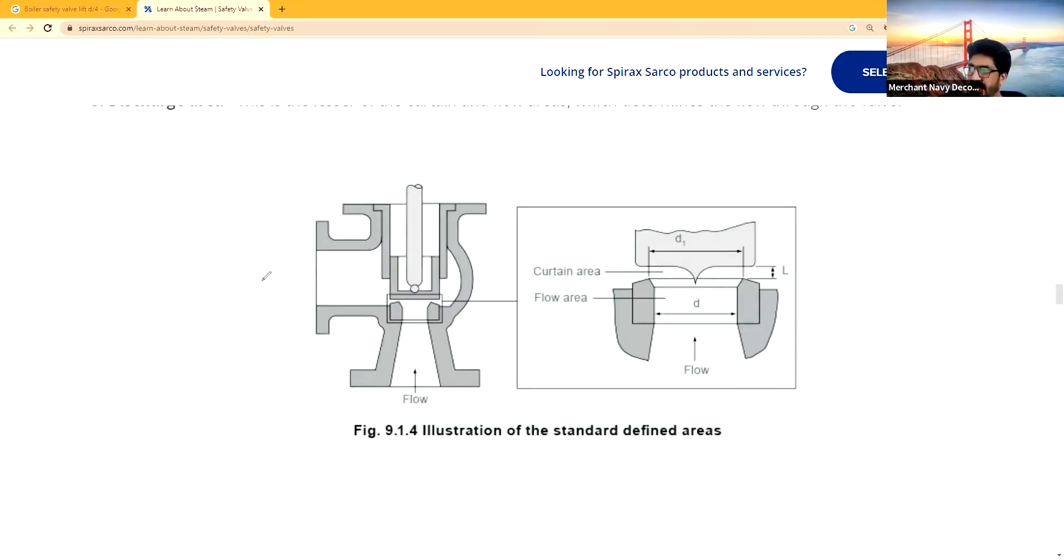So here, this is the area. First of all, this is the diameter on which the steam pressure will act. This is the area, like this here, and then the steam will be coming out from here. But now you see, this is the opening, the flow area here.